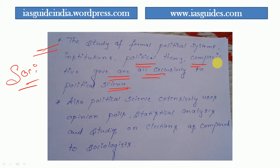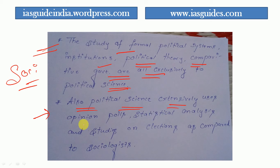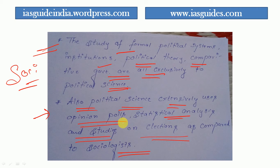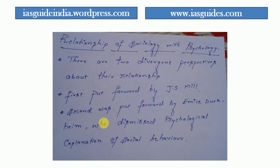The study of formal political systems, political institutions, political theory, and comparative government are exclusively for political science — sociology does not overlap much in these areas. Also, political science extensively uses opinion polls, statistical analysis, and studies on elections, which are not major areas in sociology.